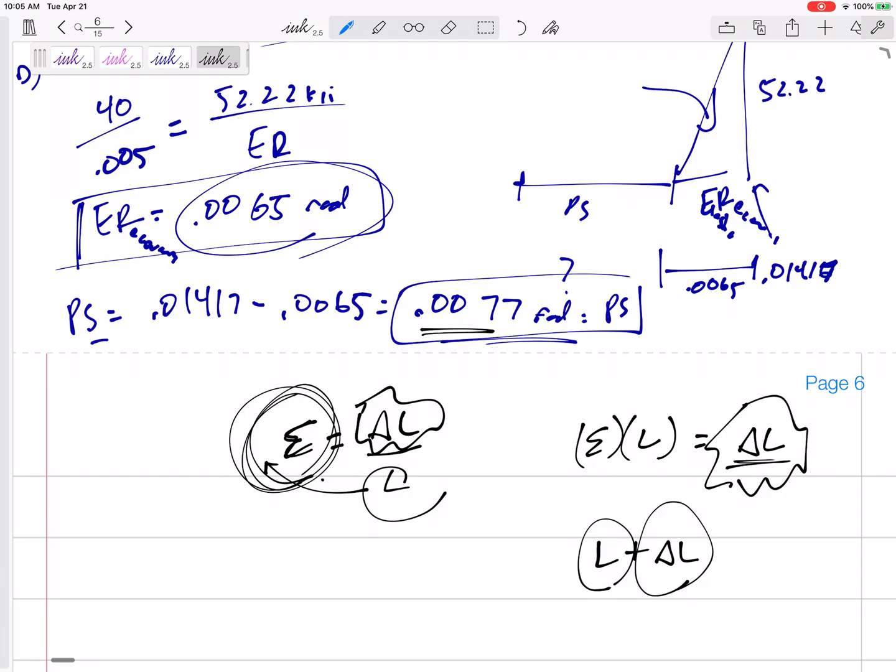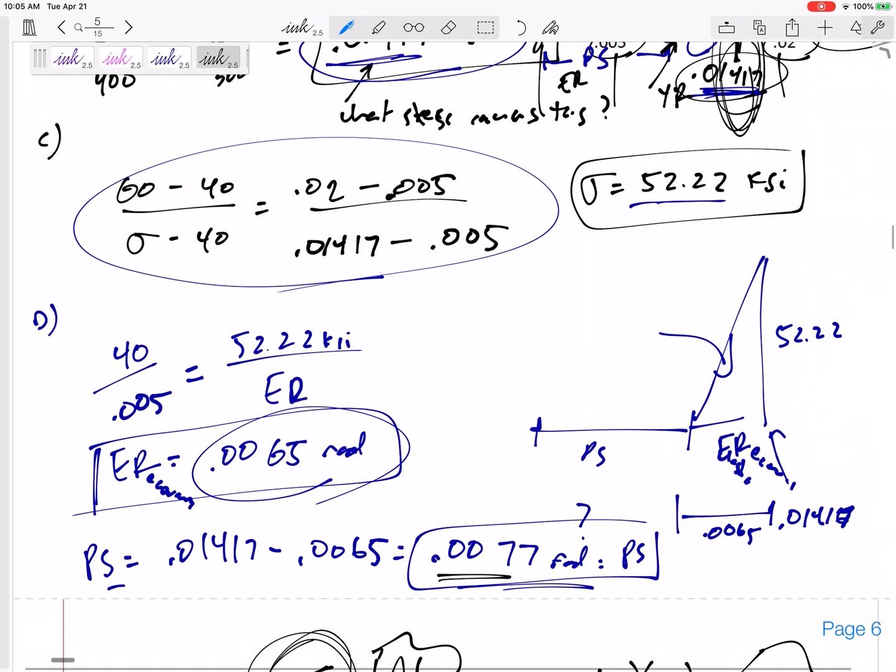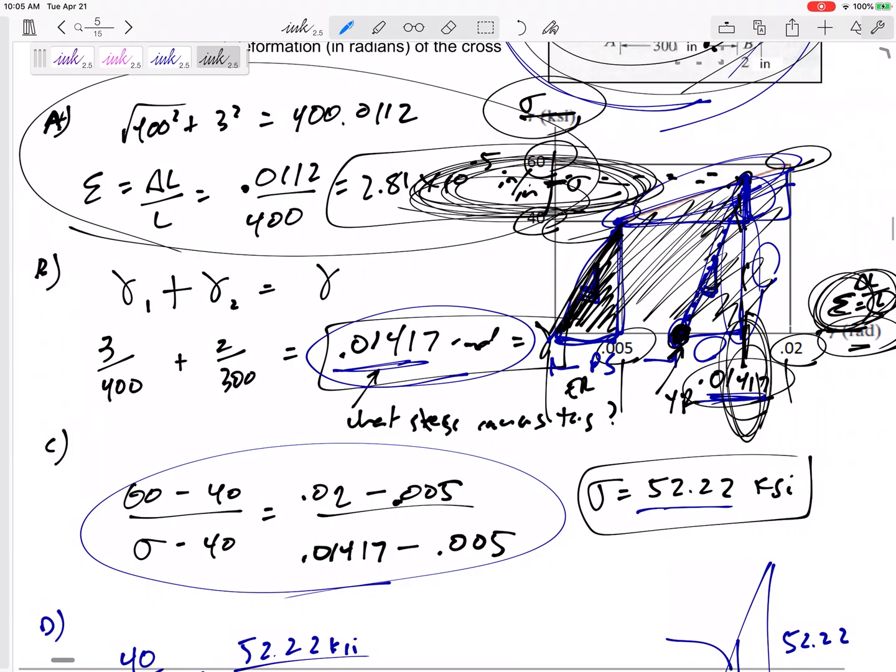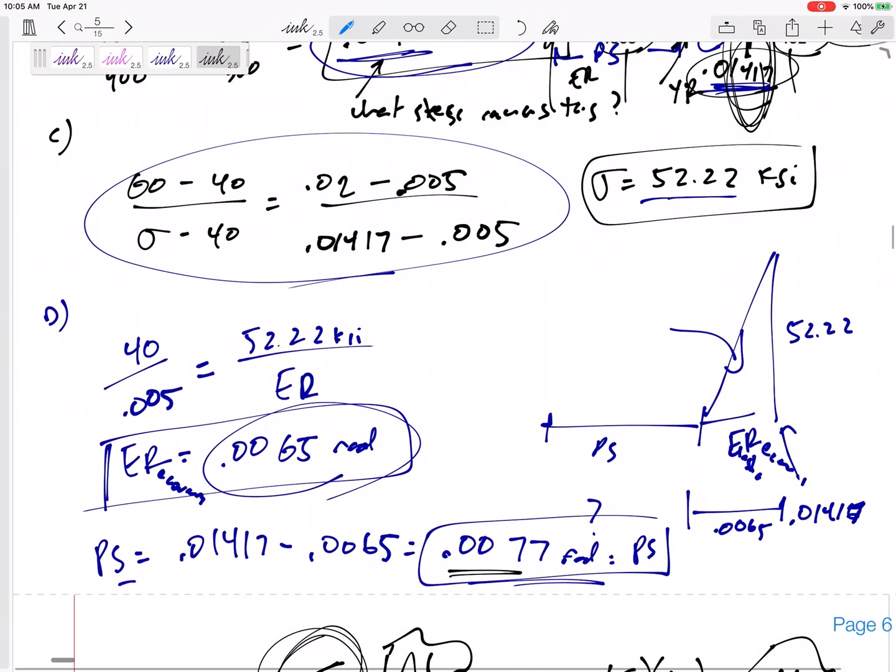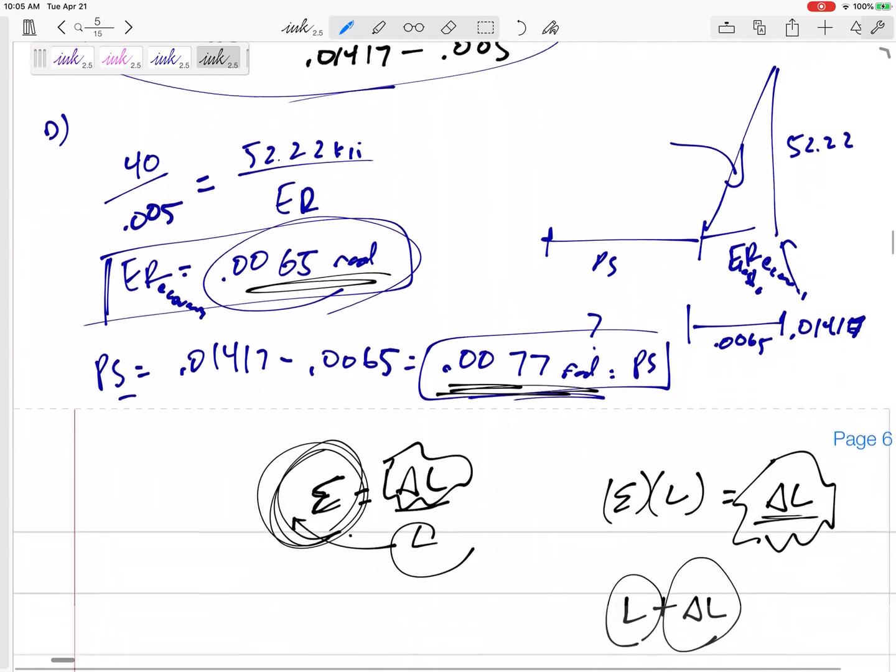You don't have to worry too much about that because this is in radians, and you don't have to multiply times an L or delta L or anything. I can't ask you any more than finding the elastic recovery and the permanent set in radians.